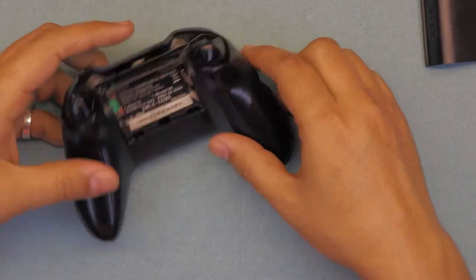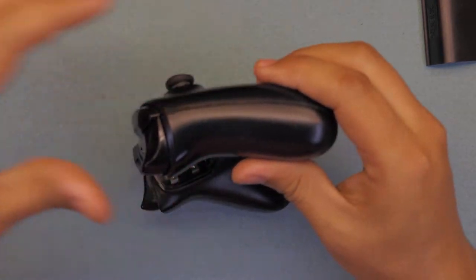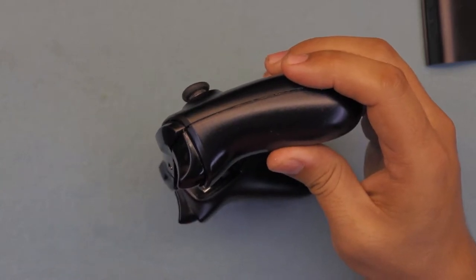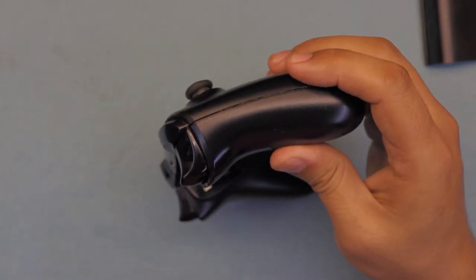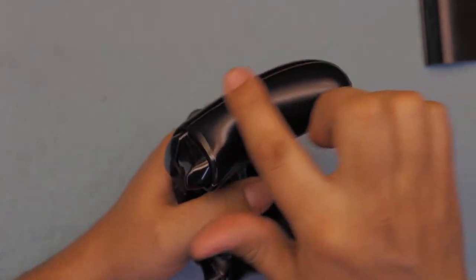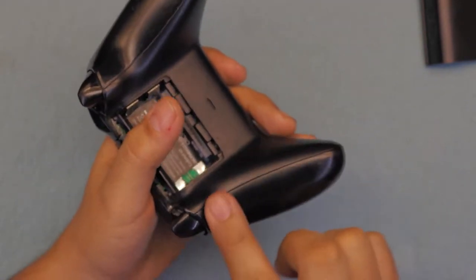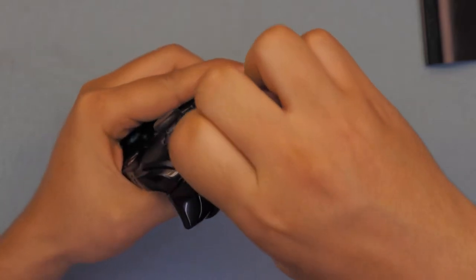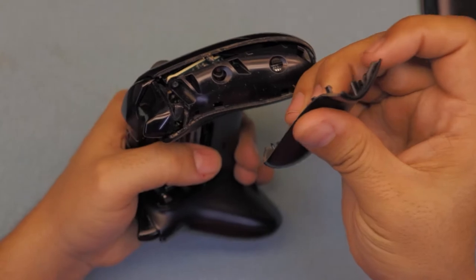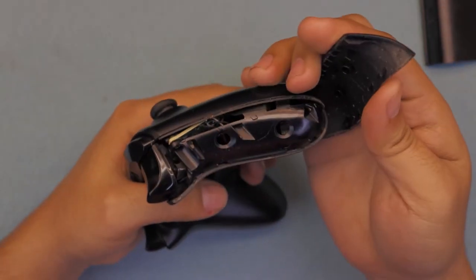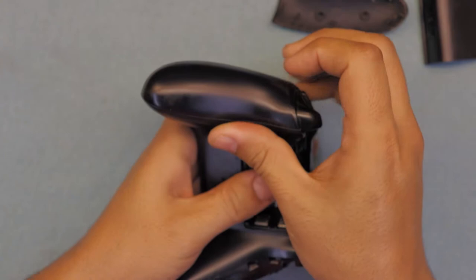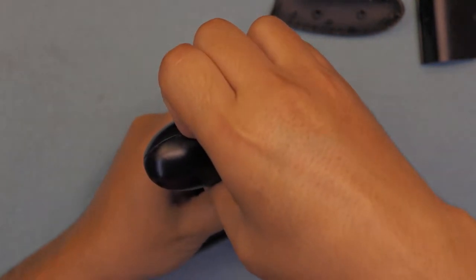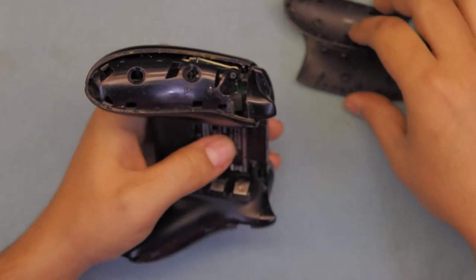First, you want to remove the cover at the back side. You want to remove this plastic cover right here. You can do it by hand. Just put your fingers right in this side and pull it apart. It will just come out. Do the same thing for the other side. Put your fingers right there and pull it outward.